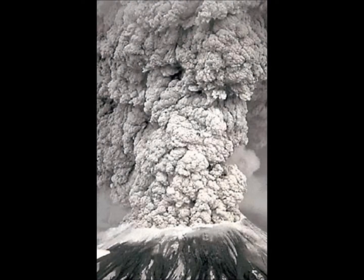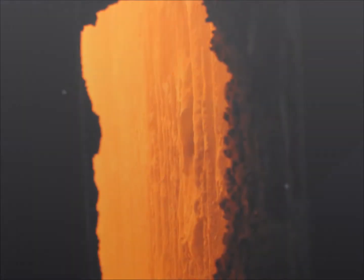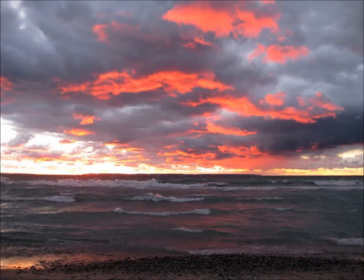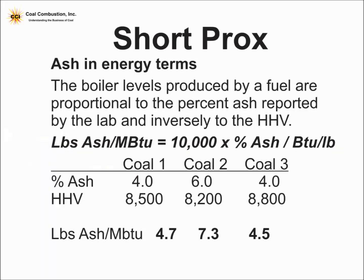You might want to consider evaluating that price. We can do the same thing for ash — the amount of fly ash and bottom ash, wear and tear, or even slagging issues are sometimes correlated to the amount of ash in the coal. So we can look at the ash in terms of the boiler by calculating pounds of ash per million BTUs, giving me a way to evaluate different percent ashes or percent BTUs and look at them in terms of the boiler.